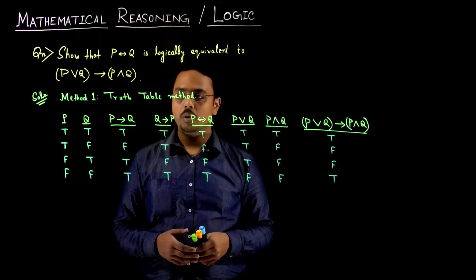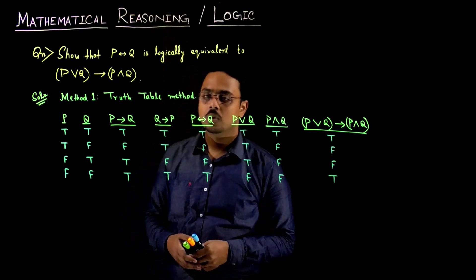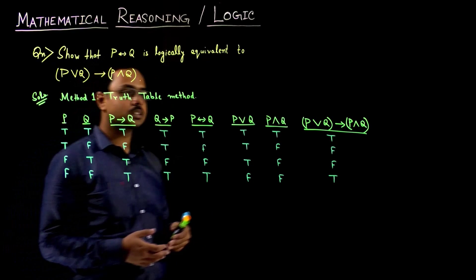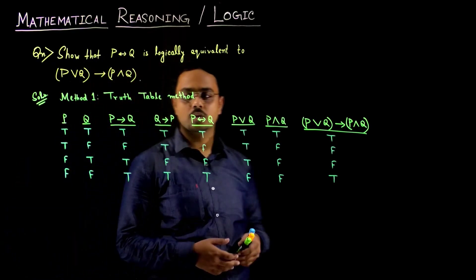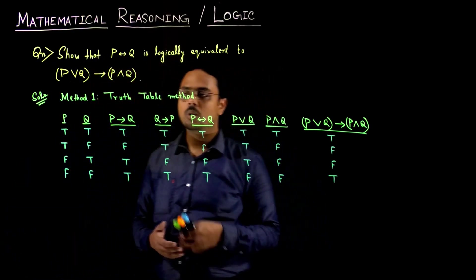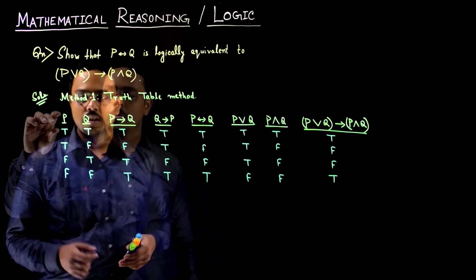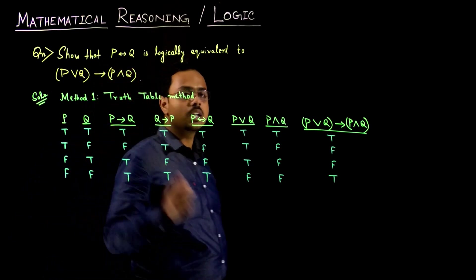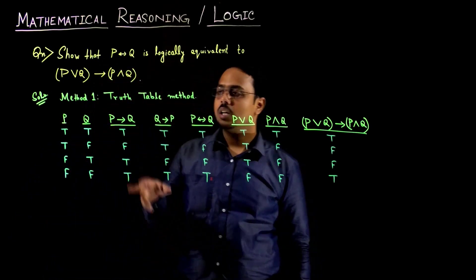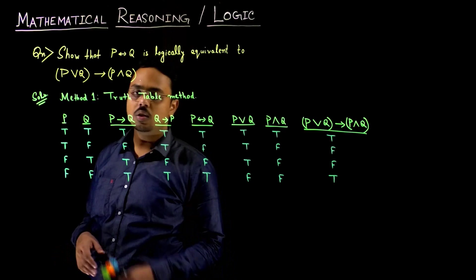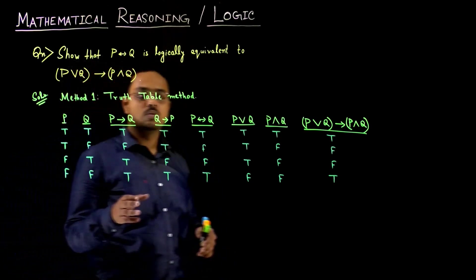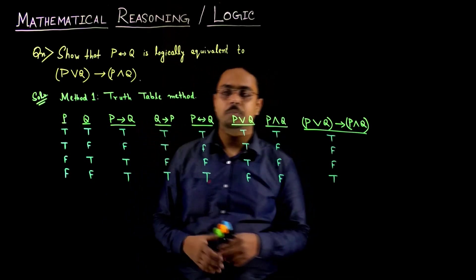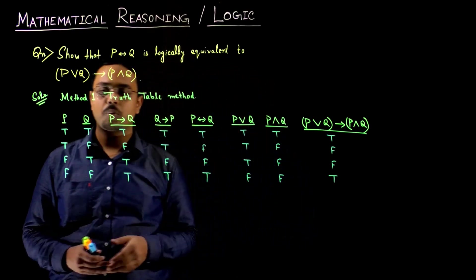This is the truth table which we will require to solve our problem. The method of plotting values in a truth table is quite easy. Those who are not aware: we first take two true values, then two false values, and then we take them alternately if there are two columns only. Then based on that we apply the rules — P implies Q and Q implies P — and solve our problem.